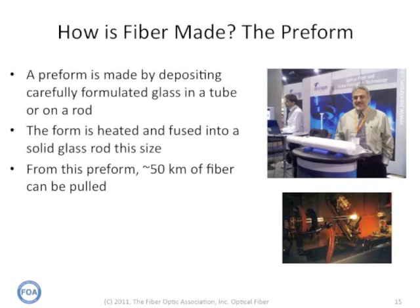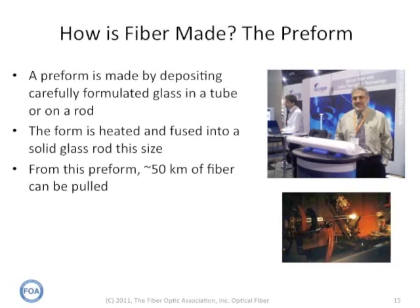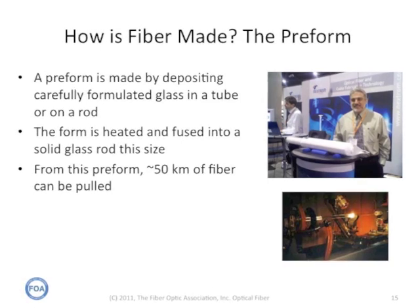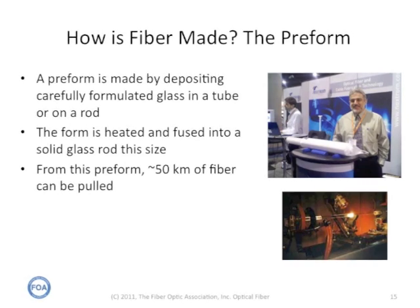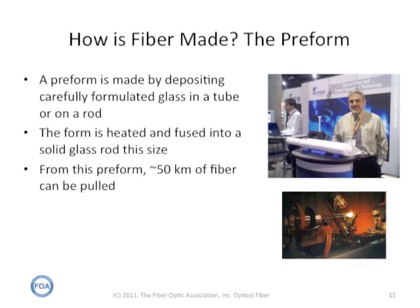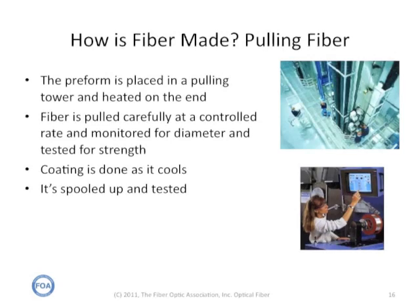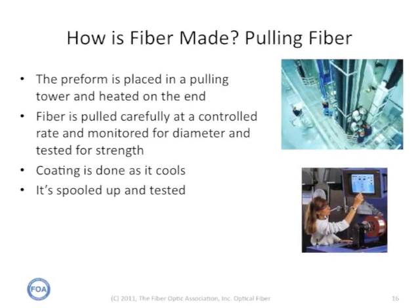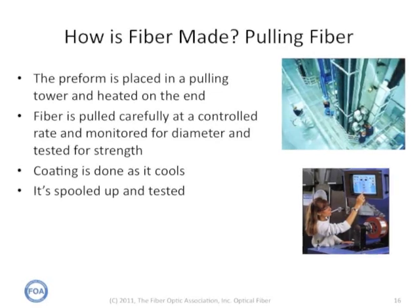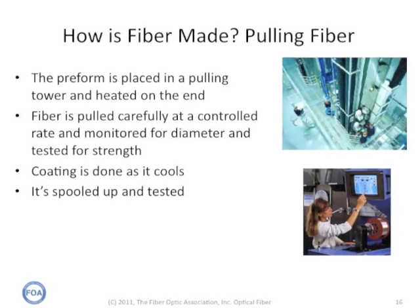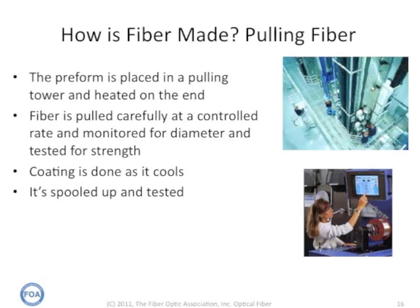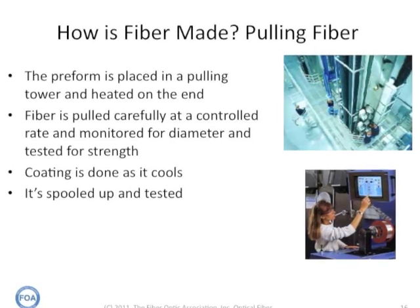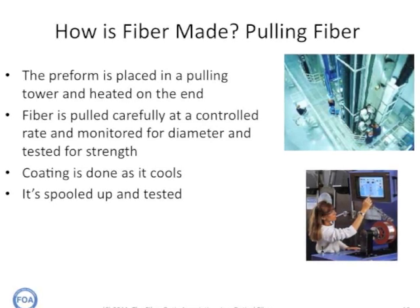One of the things people often want to know is how fiber is made. It's made from a preform. You take a glass tube or rod, deposit material around it, and heat that up to shrink it into a solid glass rod. From a preform like this, you can pull as much as 50 kilometers of optical fiber. The preform is placed in a pulling tower, heated up on the end, and the fiber is pulled as a thin strand. The fiber is pulled at a controlled rate and monitored for diameter and tested for strength. As it cools, it's covered with the primary buffer coating — usually a UV-cured acrylate. The fiber is then spooled up and fully tested, and those spools are sent to cablers who build it into cable, the topic of our next lecture.